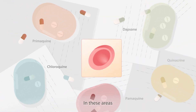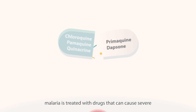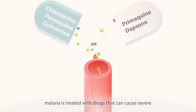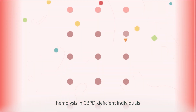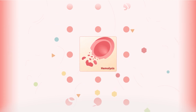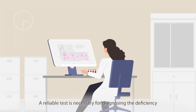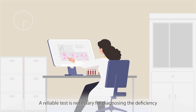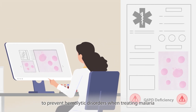In these areas, malaria is treated with drugs that can cause severe hemolysis in G6PD-deficient individuals. A reliable test is therefore necessary for diagnosing the deficiency to prevent hemolytic disorders when treating malaria.